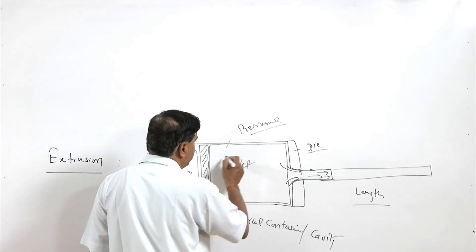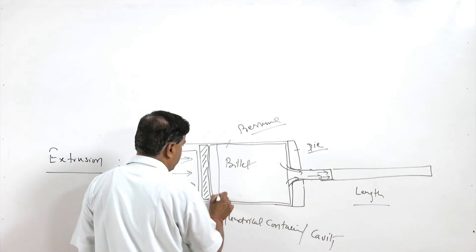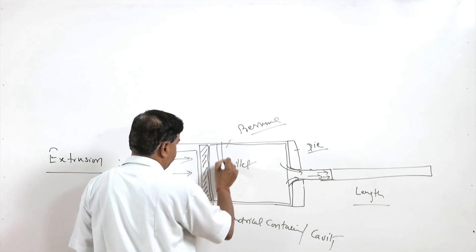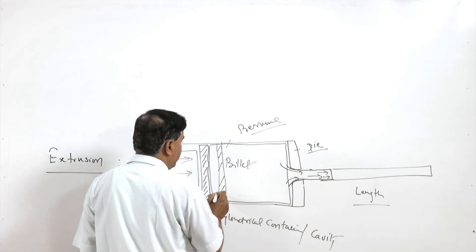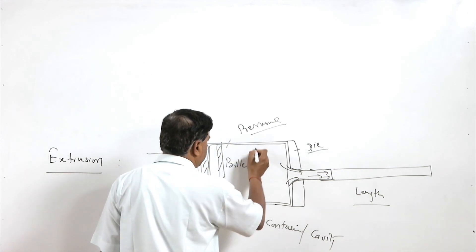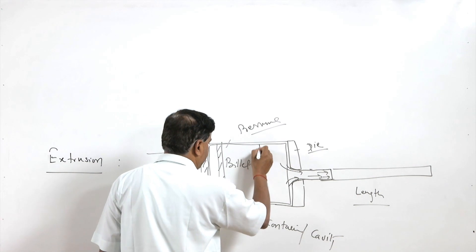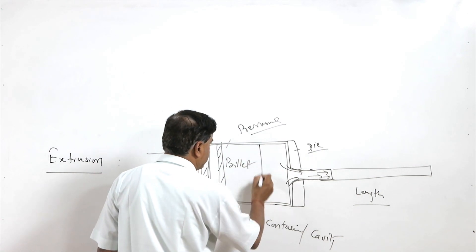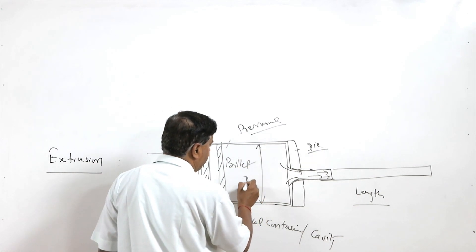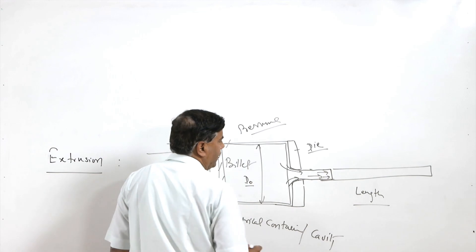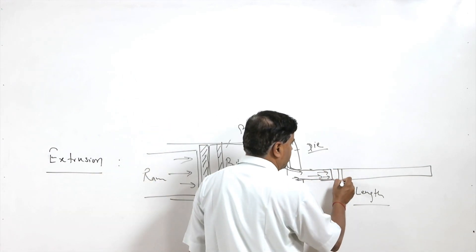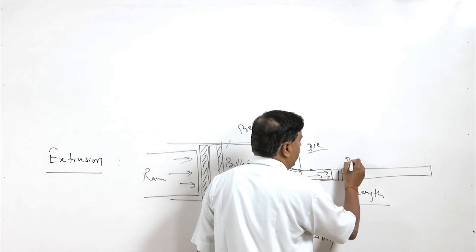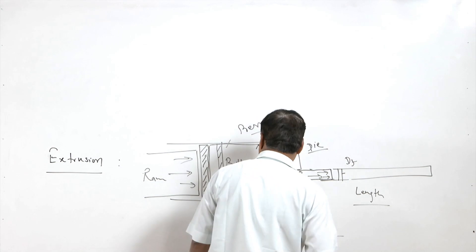If we look at the cross section of the billet — say this is the cylindrical billet with diameter d0, and the diameter after extrusion is df.